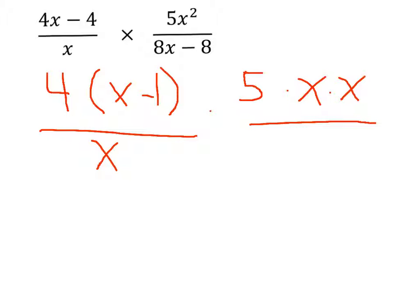The denominator on the right side can break down into 4 times 2 times x minus 1. Now we need to see what we have left and what cancels out.